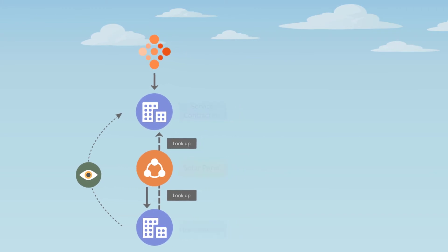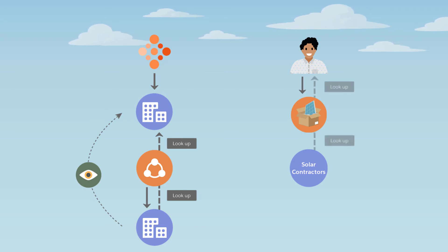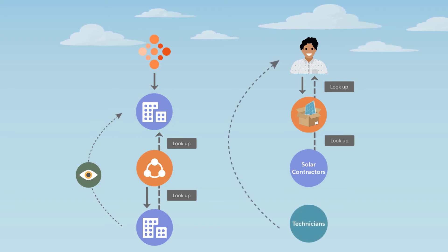Let's see this in action. Alex, a homeowner, buys a solar panel from a Pacifica reseller, Solar Contractors. He signs an installation and service contract with Solar Contractors. Solar Contractors is added as a lookup to the solar panel asset record with the Service Contract object. As a result, the Solar Contractor technicians have read access to Alex's account, so they can call him to set up an appointment.